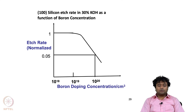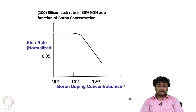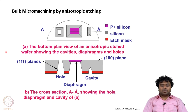Another way to control etching is boron doping. At doping concentrations up to around 10¹⁸ atoms per cm³, the KOH etching rate is unaffected. But as doping increases to 10¹⁹ to 10²⁰ atoms per cm³, the etching rate drops drastically — the normalized rate falls sharply after a threshold. We can therefore dope boron in certain regions to reduce the etching rate there, effectively creating a masking layer.